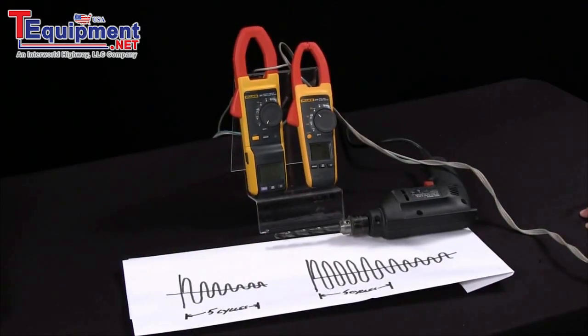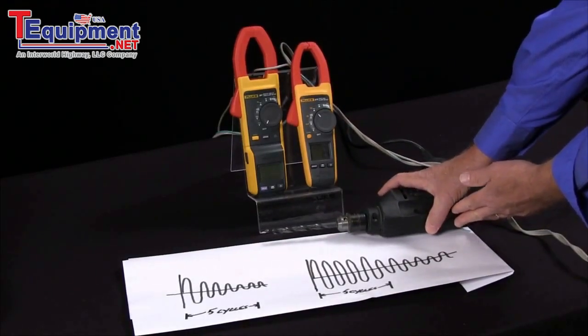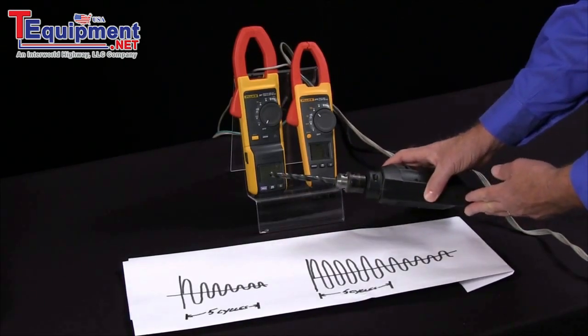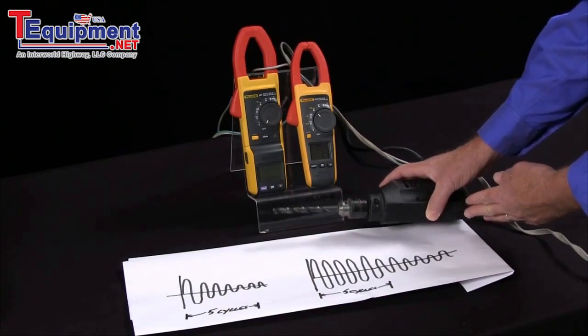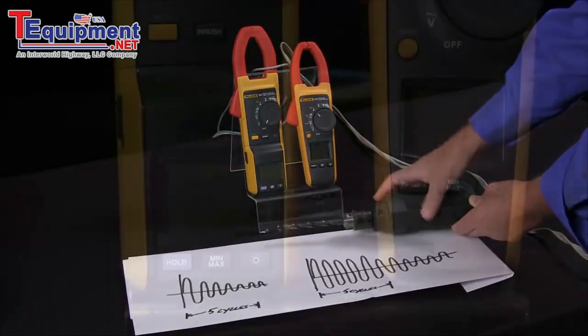What is inrush current and why is it important to be able to measure that? Well, inrush current on a motor is sometimes called the starting current or the locked rotor current, and this will increase as our device starts to age or our bearings need grease. It's also important to know how to do this so we can right size our transformers.